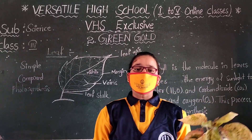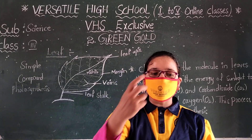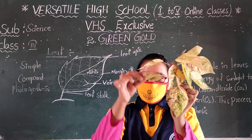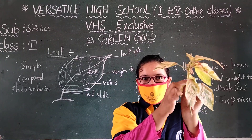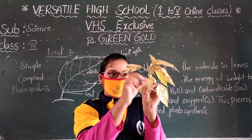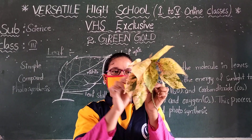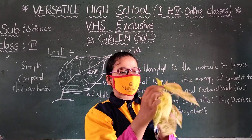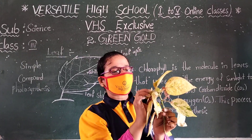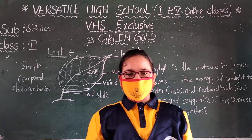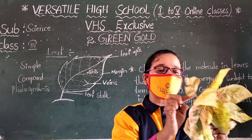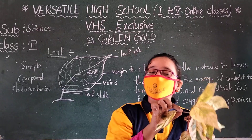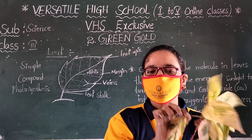Leaf can be simple — one leaf connected to the plant. This is simply one leaf connected to the plant. This is called compound. Simple: one leaf connected to the plant, or compound. Leaves have veins inside them to allow nutrients.